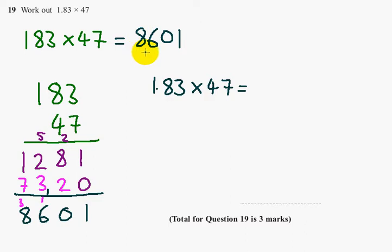So 8,601 divided by 100. The decimal place will be here between the 6 and the 0. So the final answer is 86.01.